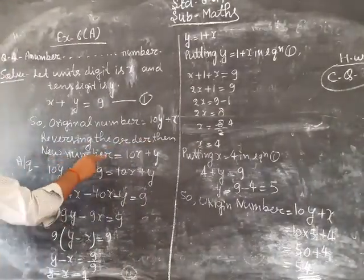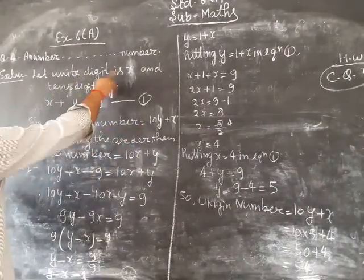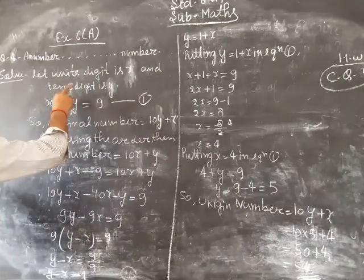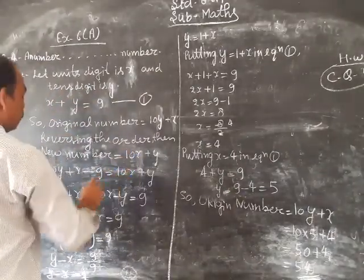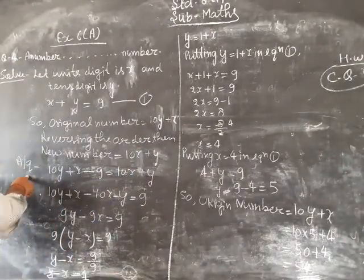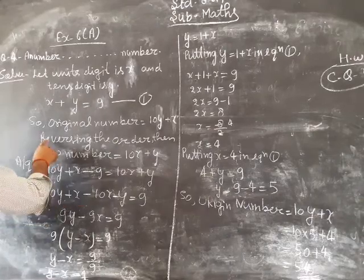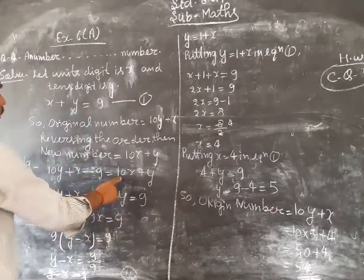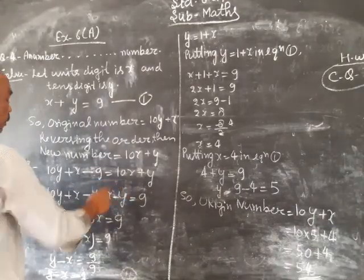So the order changes - the unit digit and tens digit swap positions. The new number is 10x plus y. According to the question, from the original number we subtract 9, so this is 10y plus x minus 9 equals 10x plus y.